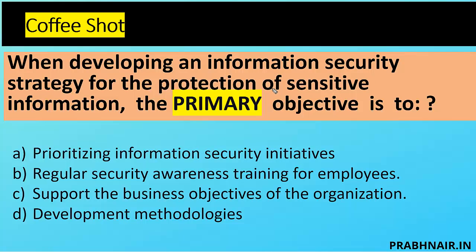Question 1: When developing an information security strategy for the protection of sensitive information, the primary objective is to — ? Note that 'developing' means they are still in the process, not finished. Option A: prioritize information security initiatives. Option B: regular security awareness training for employees — not a primary objective, removed. Option C: support the business objective of the organization. Option D: development methodology — does not make sense as a primary. We eliminate B and D, leaving A and C.